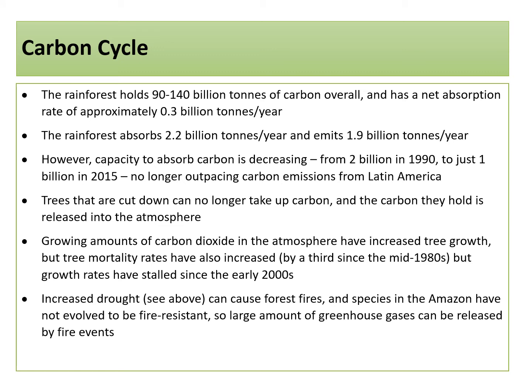The carbon cycle in the Amazon. The rainforest holds 90 to 140 billion tonnes of carbon overall, and has a net absorption rate of approximately 0.3 billion tonnes a year, as it takes in 2.2 billion tonnes a year and emits 1.9 billion tonnes a year. However, capacity to absorb carbon is decreasing, from 2 billion tonnes in 1990 to just 1 billion in 2015. This means the Amazon no longer absorbs more carbon emissions than are created by Latin America. Trees that are cut down can no longer sequester carbon, and the carbon they hold is released into the atmosphere as they are burnt or broken down by insects. Growing amounts of carbon dioxide have increased tree growth, but tree mortality rates have also increased by a third since the mid-1980s, and growth rates have stalled since the early 2000s.